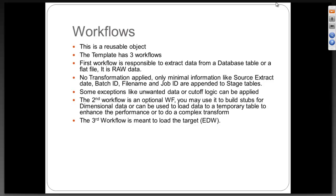In some locations you will see stage to intermediate — it is the same lifecycle way of doing it. You will stage the data, transform it and store it into a temporary location called an intermediate table. That is the second optional workflow. You will stage it, transform it and put it into a temporary place, which is the intermediate. And from intermediate to final target, it is a straightforward one-to-one load. There are a number of ways, but it is all subjective.